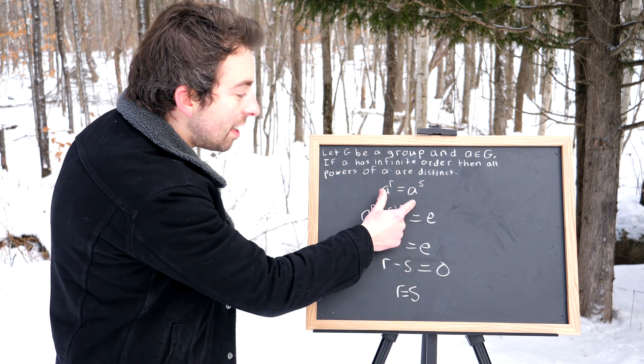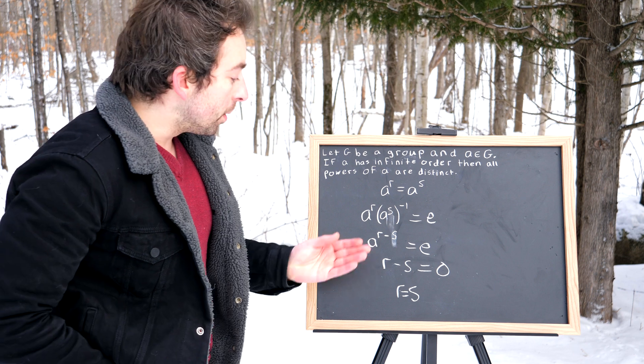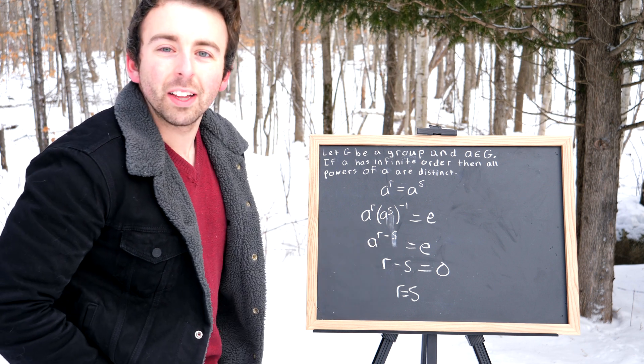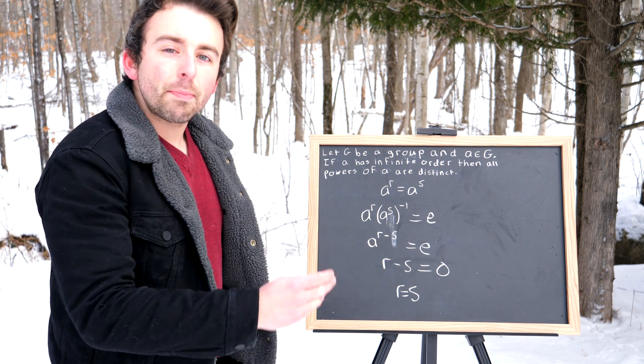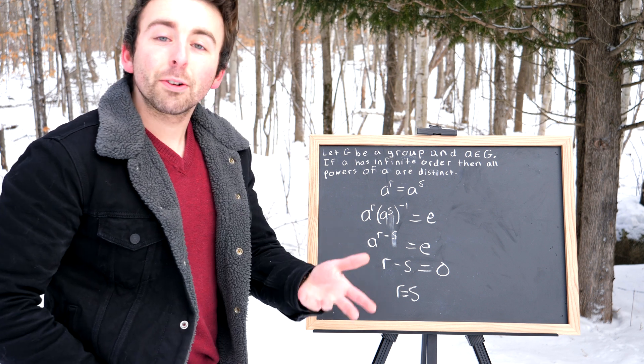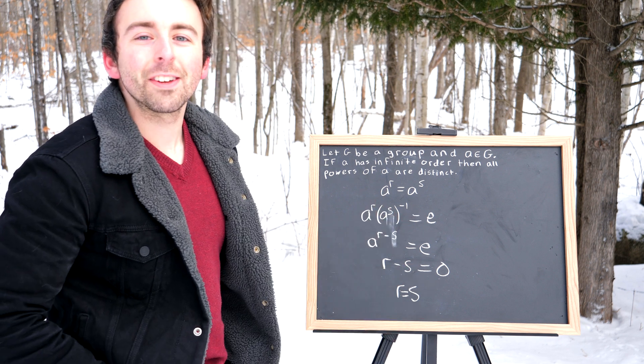So by assuming that these two powers of A were equal, we were able to show that the powers must be equal. So as desired, distinct powers of A, distinct powers must give us distinct powers of A.